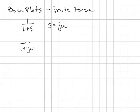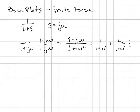I want to now get the complex value out of the denominator so I multiply by the complex conjugate. The results shown here gives me a complex number with 1 plus omega squared in the denominator.